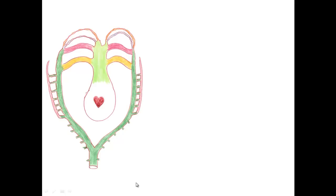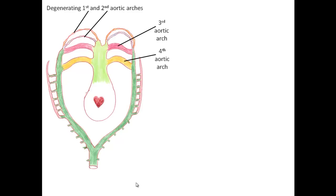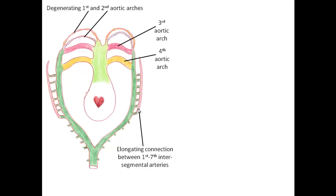Moving further along, things get interesting. The first and second arches start to degenerate, while the third and fourth arches come into existence and carry most blood from the aortic sac to the dorsal aorta. We now have seven intersegmental arteries numbered one through seven. Between the first and seventh intersegmental arteries, a bridging vessel grows and starts elongating cranially, toward the head.